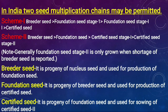Generally, Foundation Seed Stage 2nd is grown only when a shortage of breeder seed is reported. Breeder Seed is a progeny of nuclear seed and is used for production of foundation seed.